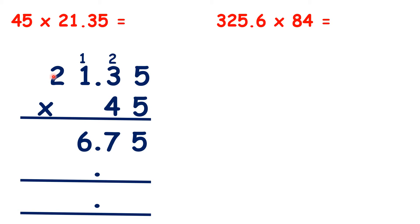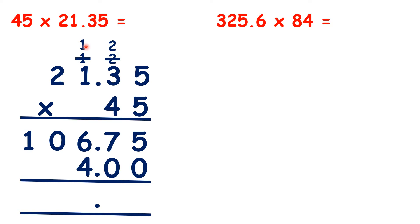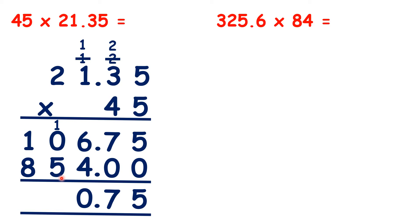1 times 5 is 5. Now we can cross out our working and write a 0 as the final digit of our second answer line. And now 5 times 4 is 20. 3 times 4 is 12 plus 2 is 14. 1 times 4 is 4 plus 1 is 5. So now adding up our answer lines: 5 plus 0 is 5, 7 plus 0 is 7, 6 plus 4 is 10, 1 plus 0 plus 5 is 6, and 1 plus 8 is 9. So because we already have the decimal point in our answer, we have 960.75.